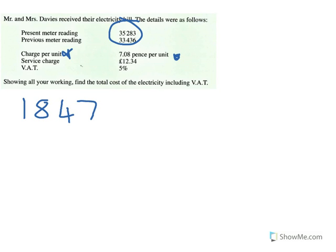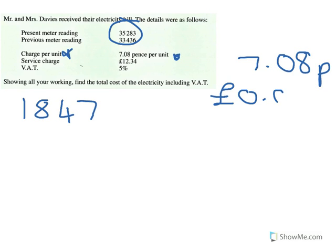Now, this is in pence. You need to change it to pounds. So 7.08 pence — change to pounds by dividing by 100. If you can't do that in your head, use your calculator. So that's 0.0708.